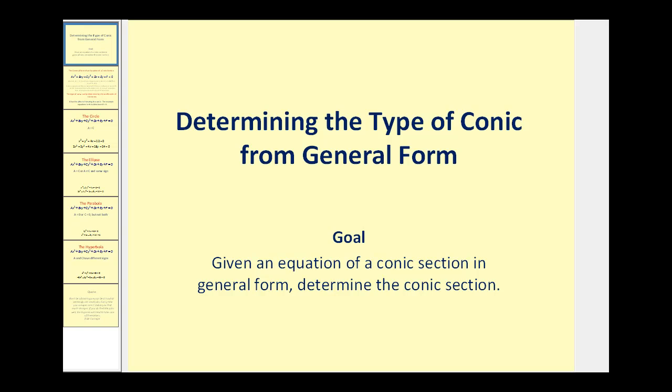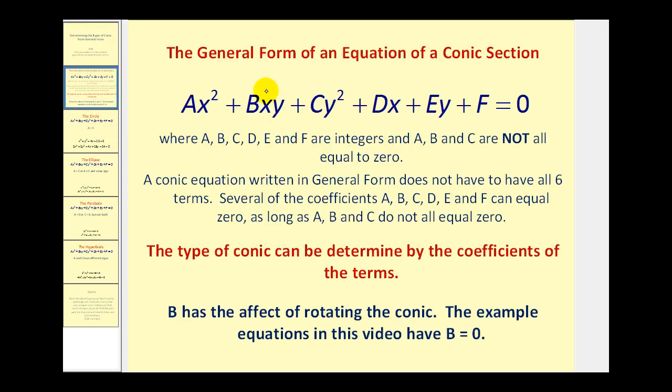Welcome to a video on determining the type of conic from the general form of the equation. Here we see the general form of an equation of a conic section where A, B, C, D, E, and F are integers and A, B, and C are not all equal to zero. Notice if A, B, and C were equal to zero, we'd have a linear equation.